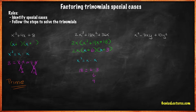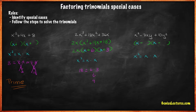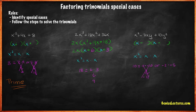Let's try factoring trinomials with two variables: x squared minus 7xy plus 10y squared. To find the first term in our answer, we look at the first term in our trinomial. x squared factors are x times x, so we write this as part of our answer. Now, we need to find two expressions whose product is 10 and their sum is negative 7. Let's factor out 10: 10 equals negative 1 times negative 10, or negative 2 times negative 5. Negative 1 times negative 10 equals 10, but negative 1 plus negative 10 is not equal to negative 7. Negative 2 times negative 5 equals 10, and negative 2 plus negative 5 equals negative 7.